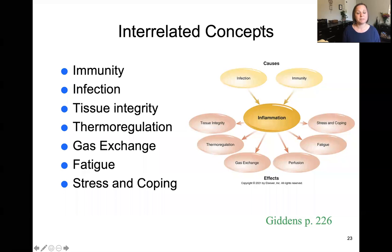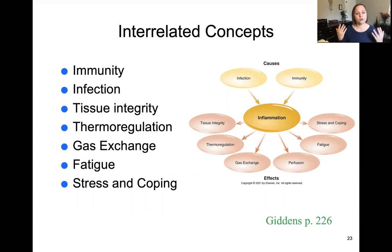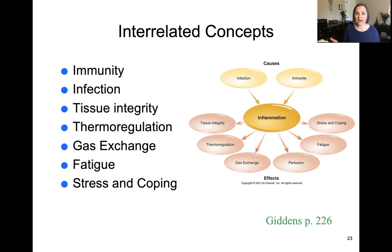Here are the interrelated concepts for inflammation. Immunity, because it is an immune response. Infection causes inflammation. Tissue integrity — when tissue integrity is compromised, you see localized inflammation. Thermoregulation — when you have inflammation, body temperature goes up. Gas exchange — there is an increased oxygen demand in areas of inflammation. Fatigue — inflammation is very taxing for the body and patients will experience fatigue. And stress can cause a chronic increase in inflammation, because the body perceives constant attack and raises the inflammatory response continuously, which is not a healthy way to live.